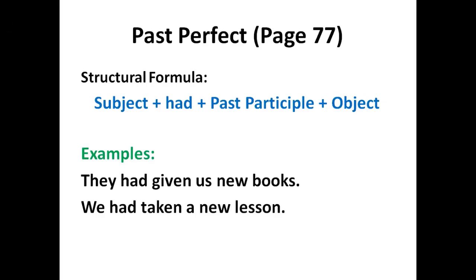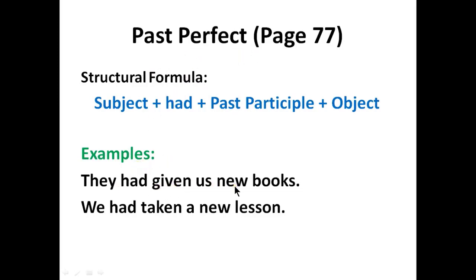The first exercise belongs to past perfect tense. What is the structure of a past perfect tense? My dear students, please be careful while you are understanding this lesson. These ingredients are items which I am going to name: subject, helping verb, past participle verb, and an object. If all these items are present in any sentence, you can call it a sentence of past perfect tense. Here are two examples: 'They had given us new books.'